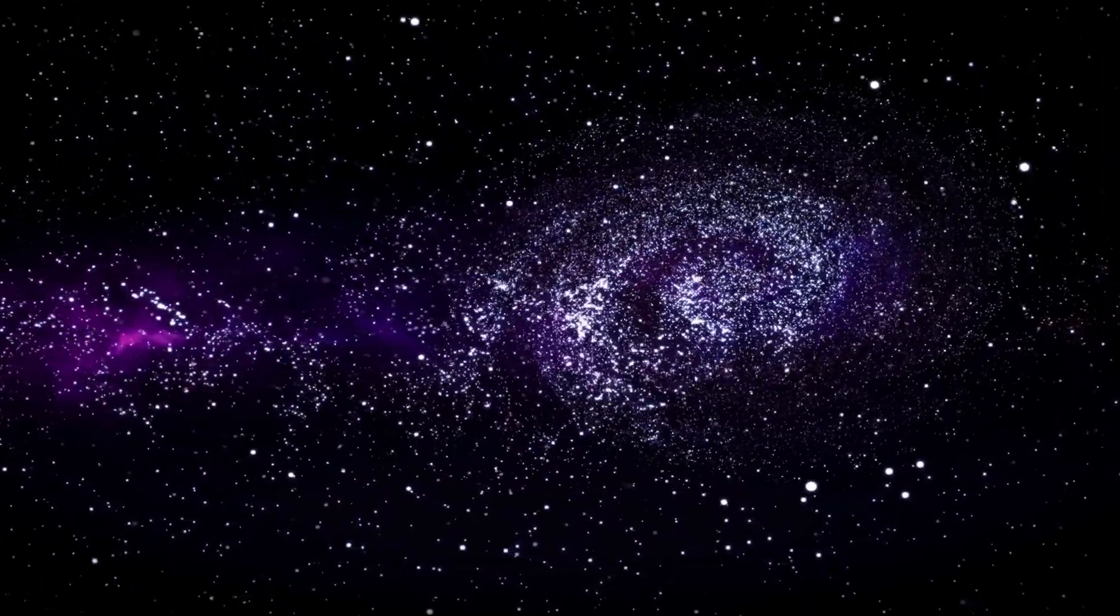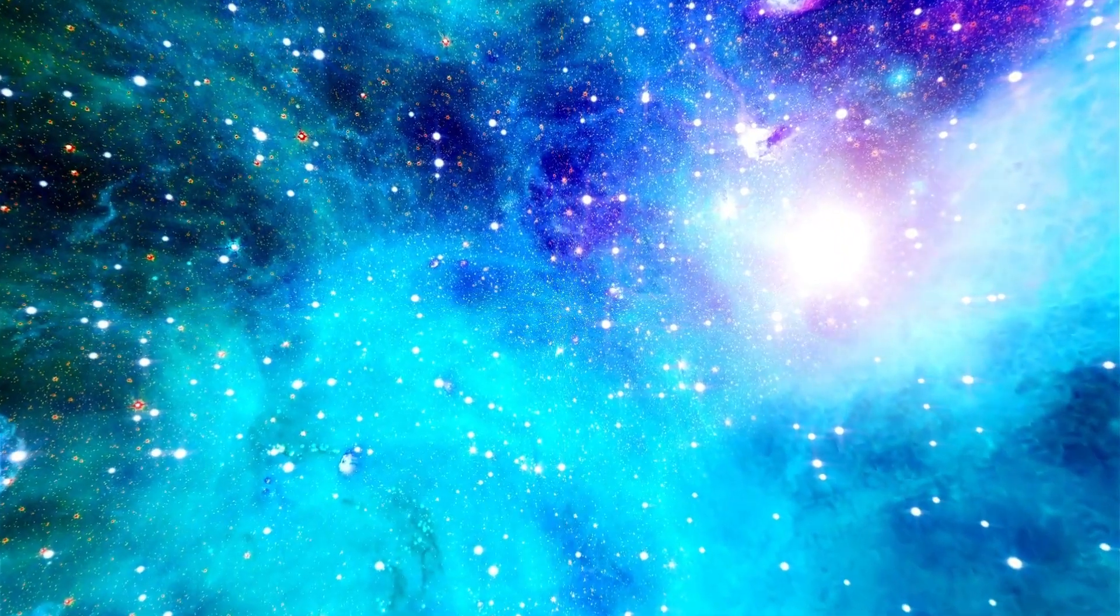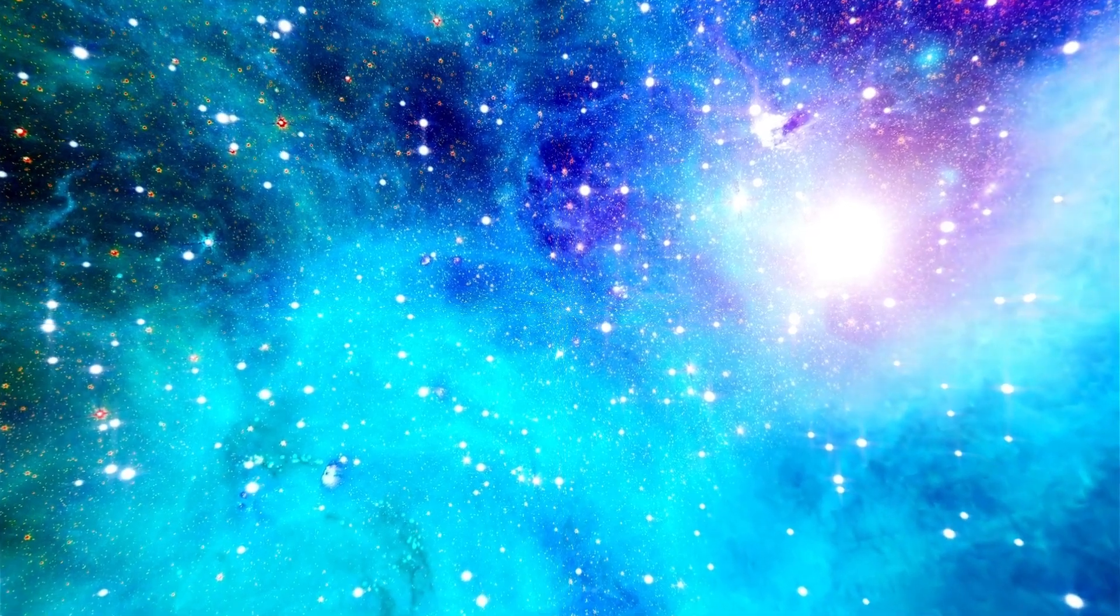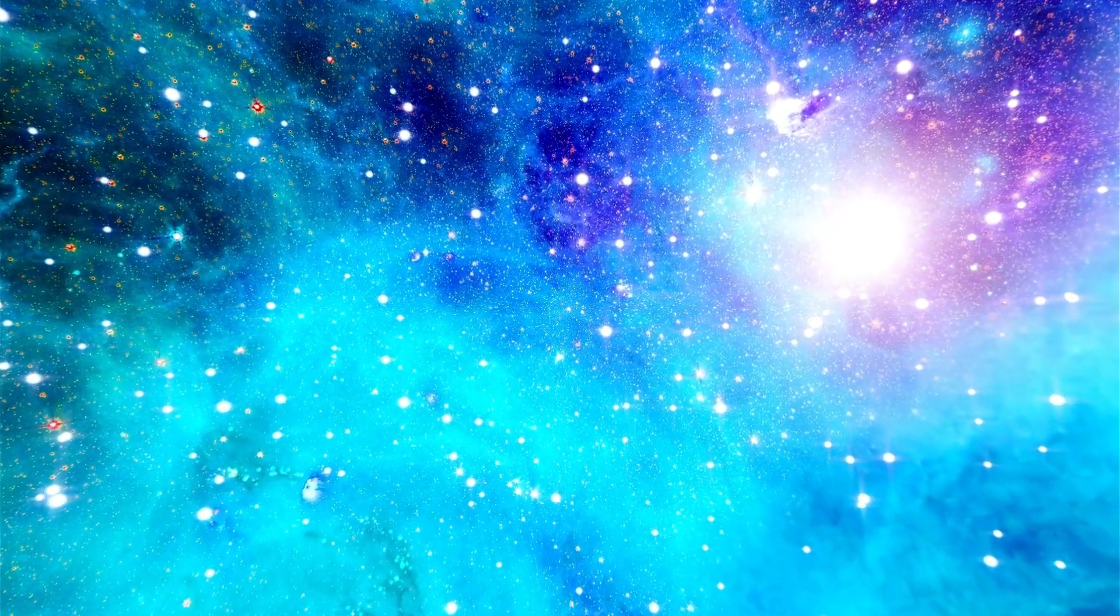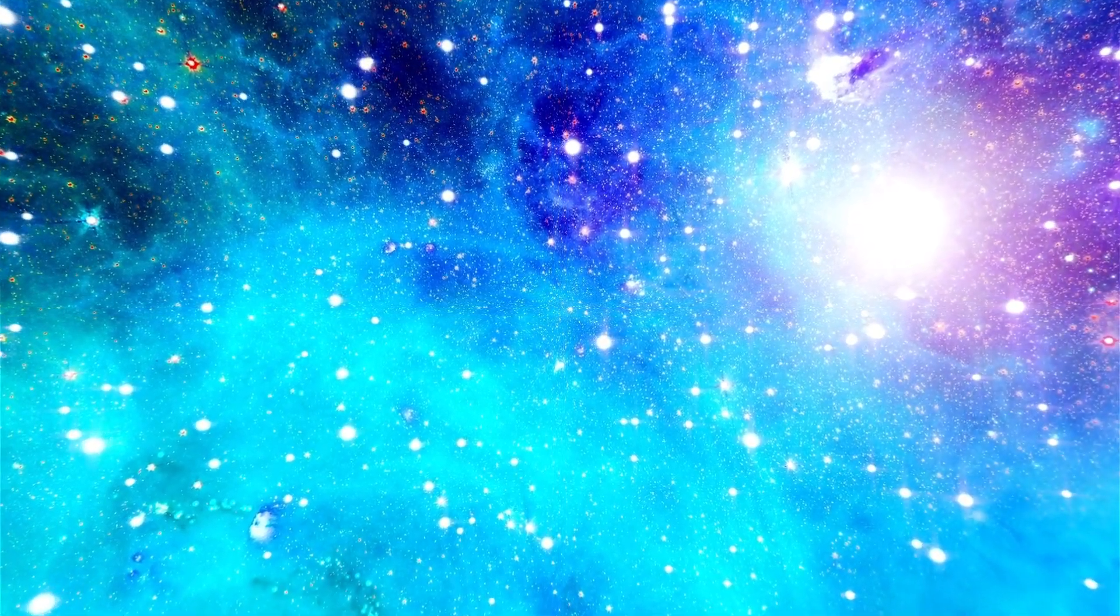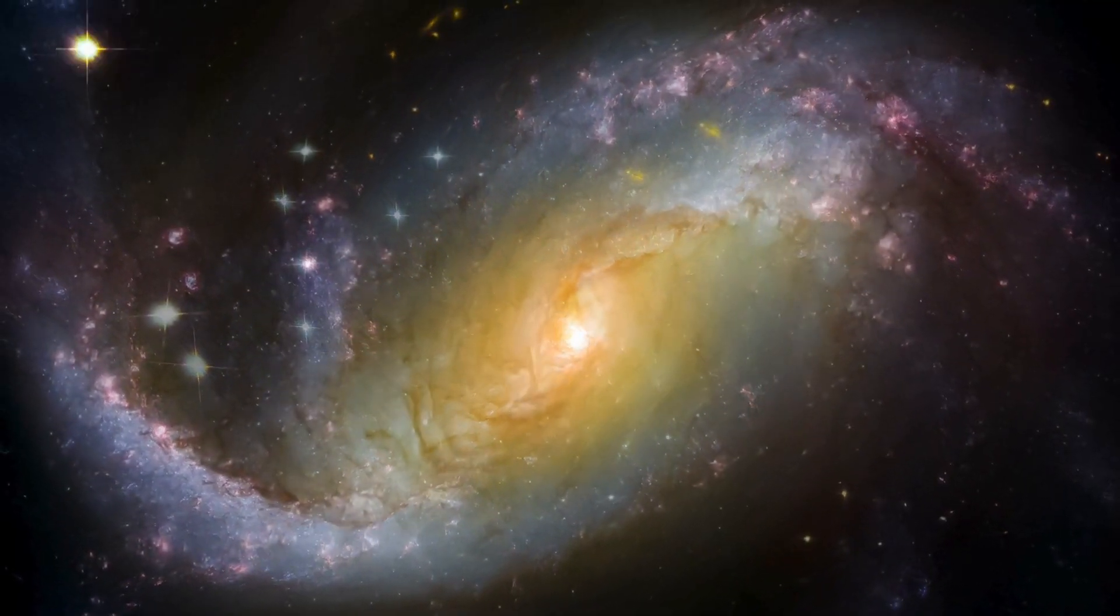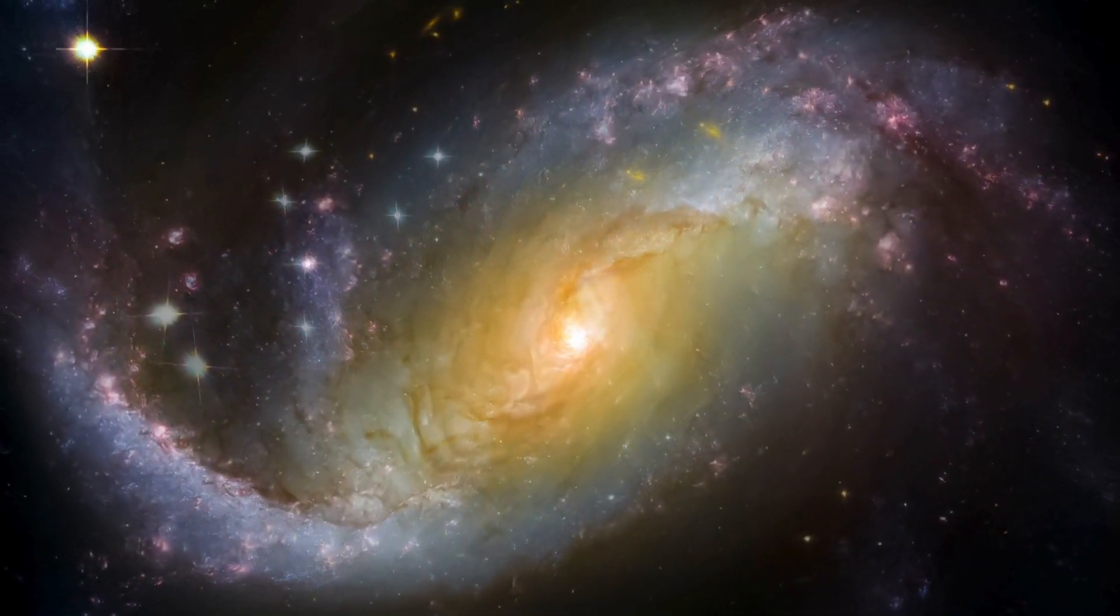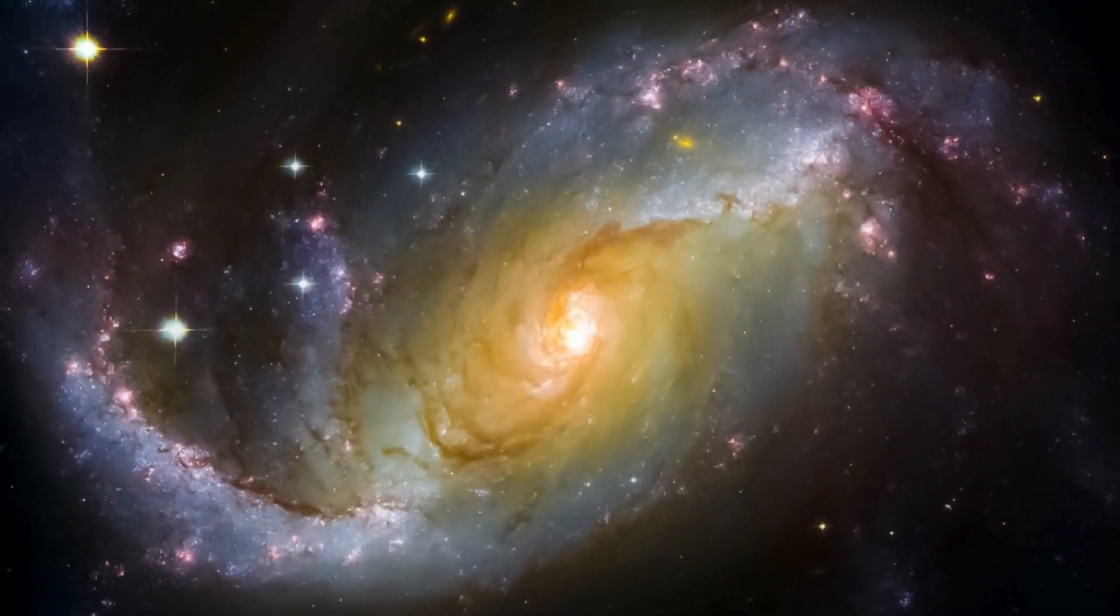In September 2021, Webb captured the first-ever direct image of an exoplanet, revealing the presence of HIP 65426b, a massive gas giant located light-years away from Earth. This monumental achievement marked a significant milestone in the field of exoplanetary science, offering researchers a tantalizing glimpse into the diverse array of worlds that populate our galaxy.